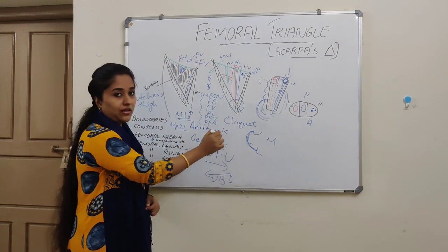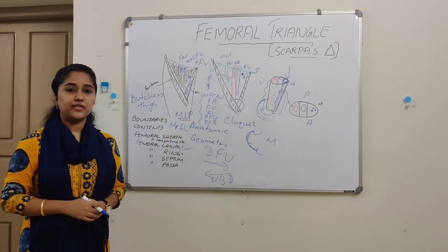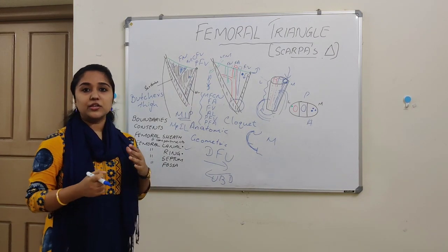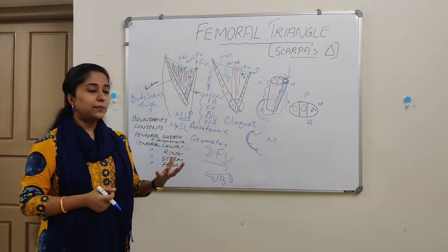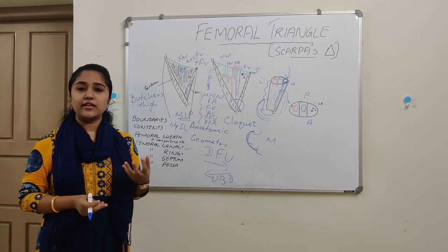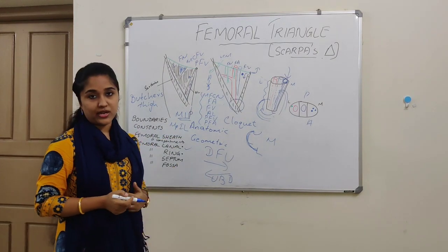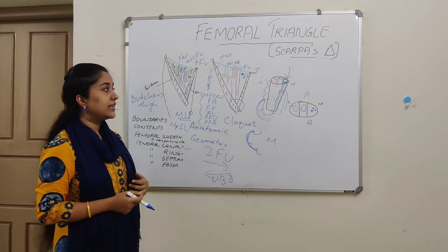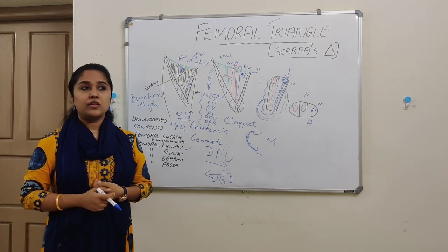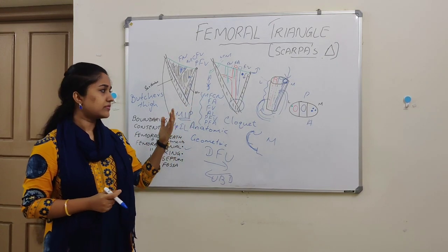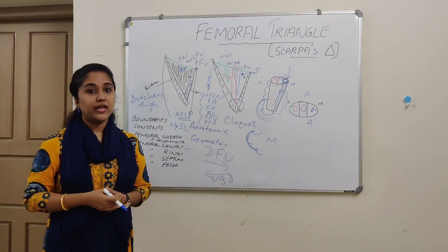The apex continues as the adductor canal, which we will discuss later. A lump in the groin is very important clinically and can have many differential diagnoses. These include enlarged inguinal lymph nodes, lipoma, aneurysm of the femoral artery, neuroma of the femoral nerve, hematoma of the femoral vein due to venipuncture, dilatation of the great saphenous vein, femoral or inguinal hernia, and ectopic testis in the femoral triangle.